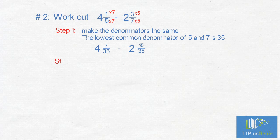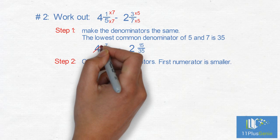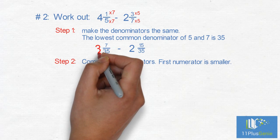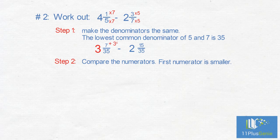Step 2: Compare the numerators of the fractions. We see that the first numerator is smaller than the second numerator. We borrow one whole from the whole number and cut it into 35 parts. We add this 35 to the 7 thirty-fifths, which gives us 42 thirty-fifths. We now have 3 and 42 thirty-fifths minus 2 and 15 thirty-fifths.